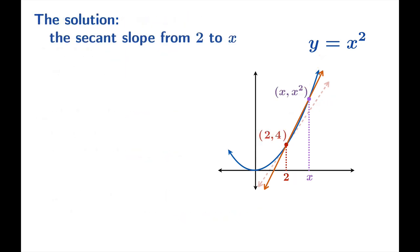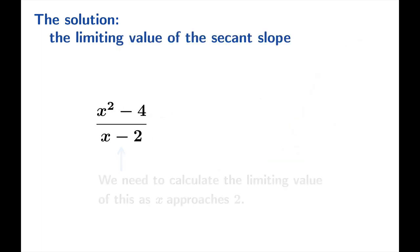So we find the slope by taking the change in function value, which would be x squared minus 4, and the change in argument, which would be x minus 2. So the secant slope is this quotient. And now we need to take the limiting value of this as x approaches 2. So we want the limit of this as x approaches 2.